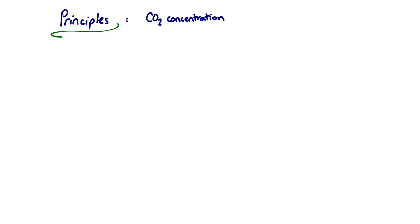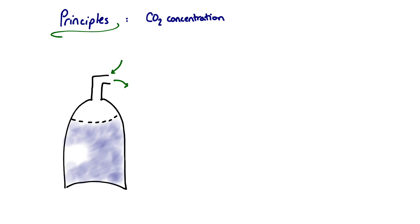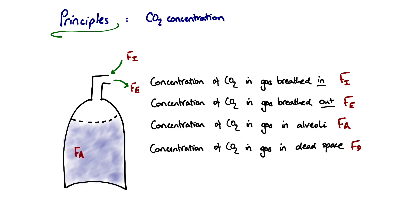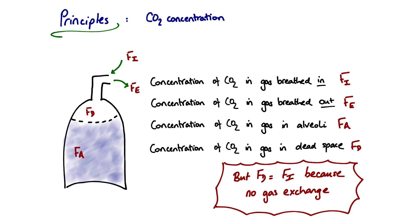Next, we assign labels for the different CO2 concentrations in different volumes of gas. The concentration of CO2 in inspired gas is labelled FI, or fraction of inspired. For expired gas it is FE. The concentration of CO2 in the alveolar space — the volume involved in gas exchange — is labelled FA. The concentration in the dead space is labelled FD. We can then make an early simplification: because the dead space is not involved in gas exchange, there are no CO2 changes there, as CO2 won't be moving into or out of the pulmonary capillaries. Therefore FD equals FI, so the dead space fraction term simply becomes FI.